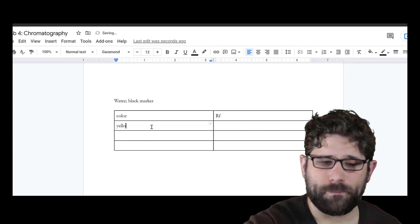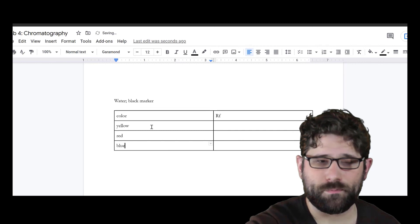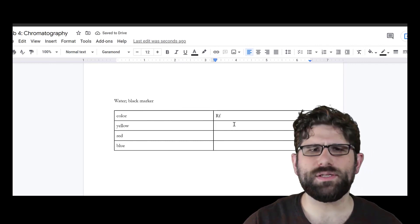Then I've got my color and I've got my RF value. So I've got my yellow, got my red and I've got my blue. Then I just put those values in.